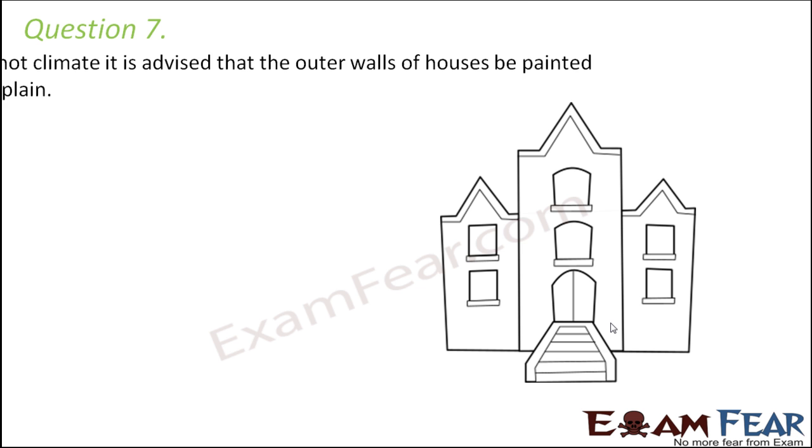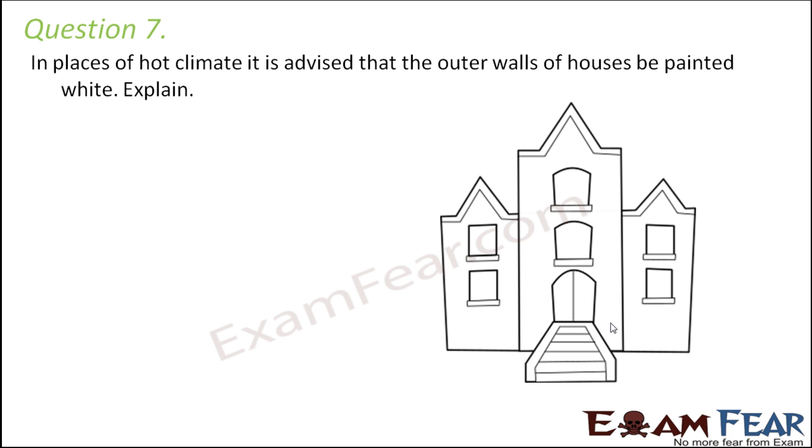Question number 7. In places of hot climate it is advised that the outer walls of houses be painted white. That's because in hot climate we do not want the inside of the house to be very hot.